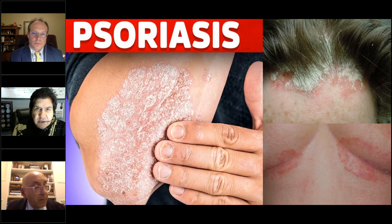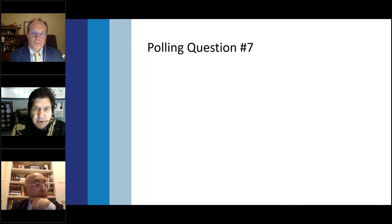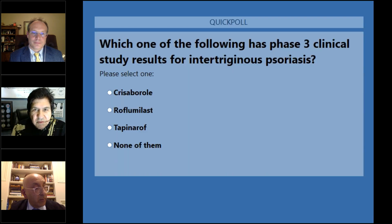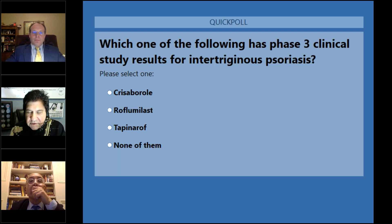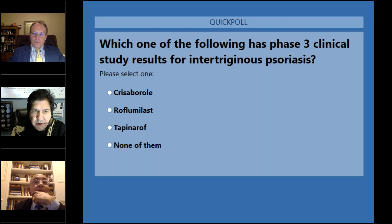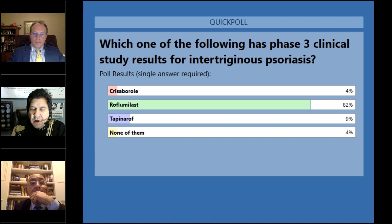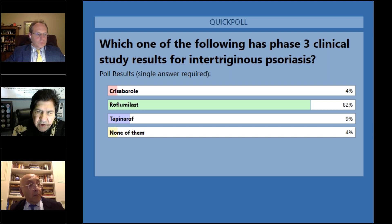Let's move on to psoriasis. A polling question: which of the following has phase three clinical study results for intertriginous psoriasis — meaning a separate investigation specifically into intertriginous areas as opposed to all psoriasis pooled together? The answer is roflumilast — that was the only one where they did a separate investigator global assessment for the intertriginous areas and evaluated efficacy and safety specifically in those areas.